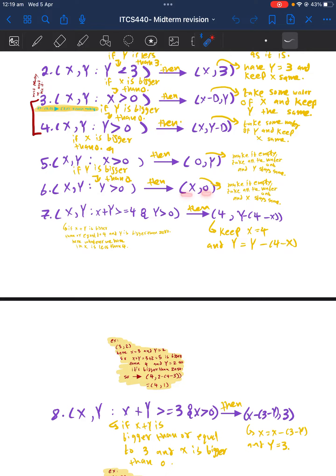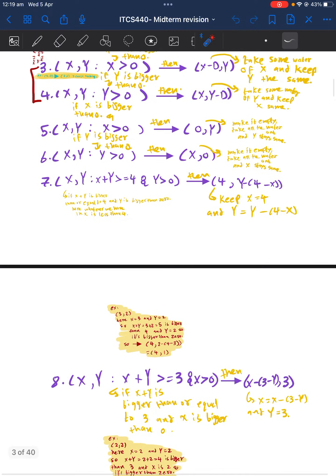Rule number seven says if X plus Y is bigger than or equal to four and Y is bigger than zero, then we will keep the X as four, but Y will be Y minus four minus X.